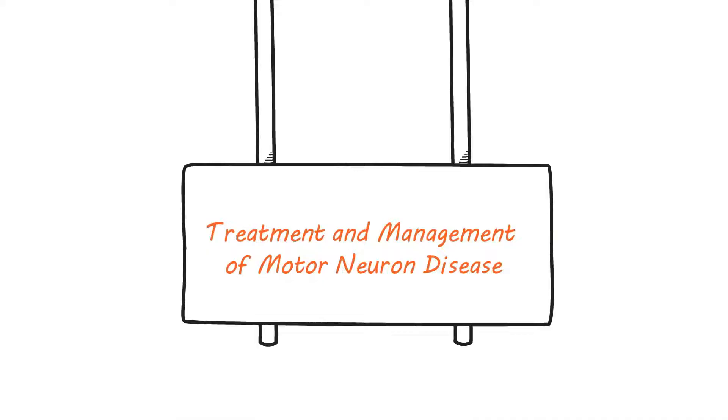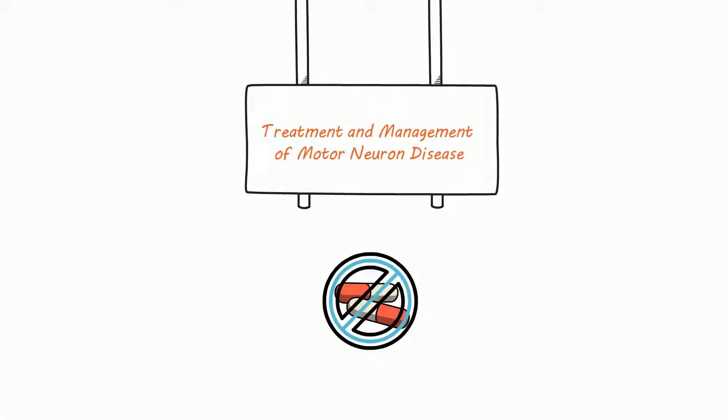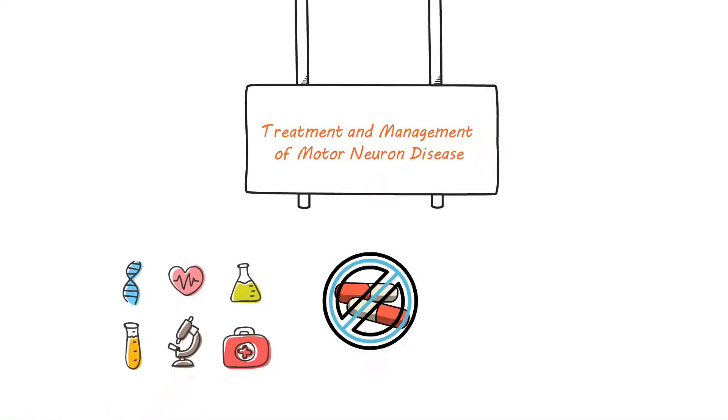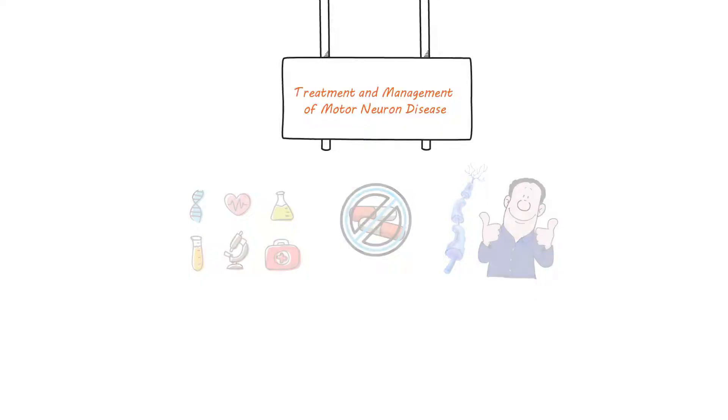Treatment and Management of Motor Neuron Disease. Currently, there is no cure for Motor Neuron Disease. However, there are several treatments and management strategies that can help to improve quality of life and slow the progression of the disease. Treatment and management strategies may include: